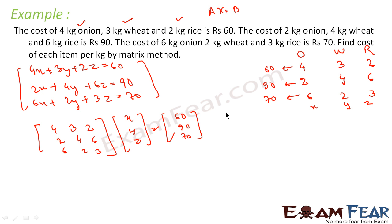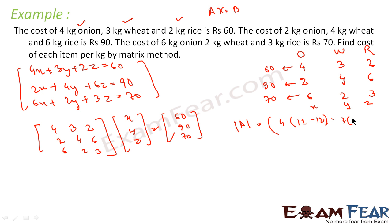Next, find the determinant of A to check consistency: det(A) = 4·(4·3 − 6·2) − 3·(2·3 − 6·6) + 2·(2·2 − 4·6). Working through this: 4·0 = 0, 3·(−30) = −90, so −3·(−30) = 90, and 2·(−20) = −40. This gives us determinant of A = 10, which is not equal to 0.